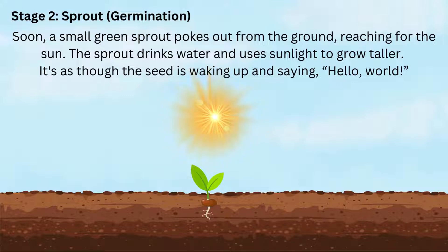Stage 2: Sprout — Germination. Soon a small green sprout pokes out of the ground, reaching for the sun. The sprout drinks water and uses sunlight to grow taller. It's as though the seed is waking up and saying, 'Hello world!'